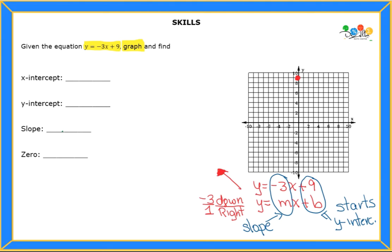Once I do that, then I'm going to follow my slope that says I'm going to go 3 down. So let's count: 1, 2, and 3 down. After that, I'm going to go 1 to the right, which is right there. And I'm going to do the same thing: 3 down and 1 to the right, 3 down and 1 to the right.